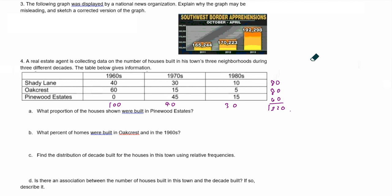Okay, here we go. We're going to work through another trickier understanding in section 1.1. In this trickier understanding, it's very similar to the last one — we're going to check out displays, use create associations, and also use a two-way table to determine if there's an association between two different variables.